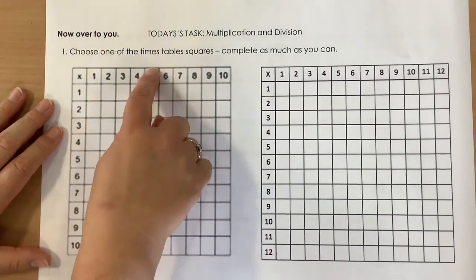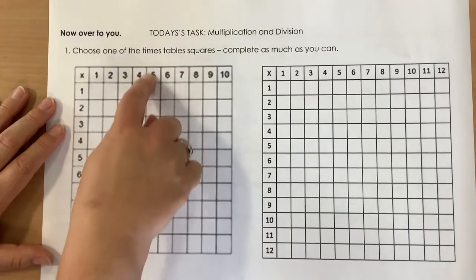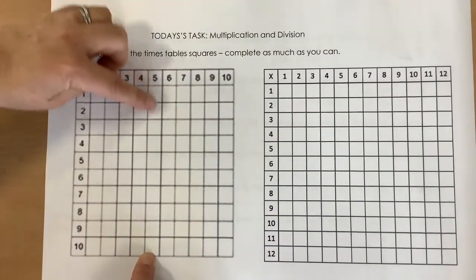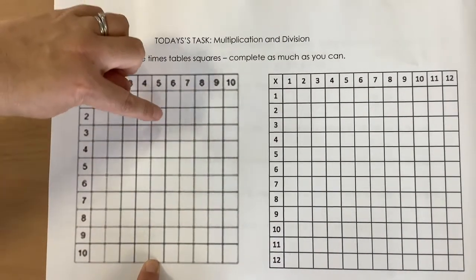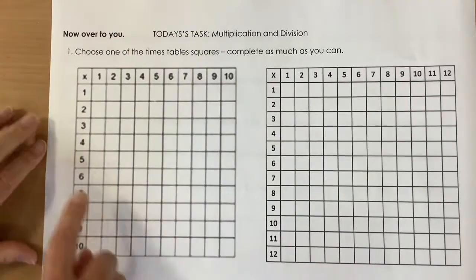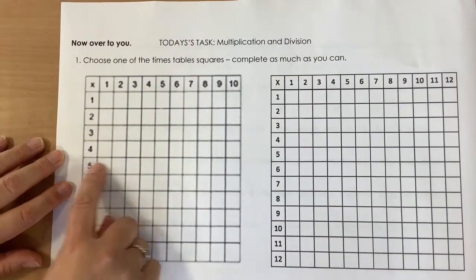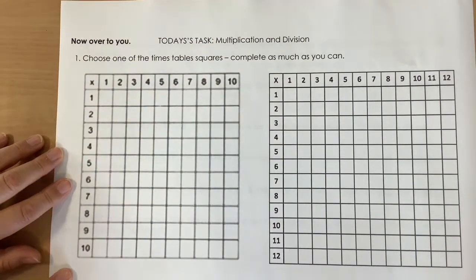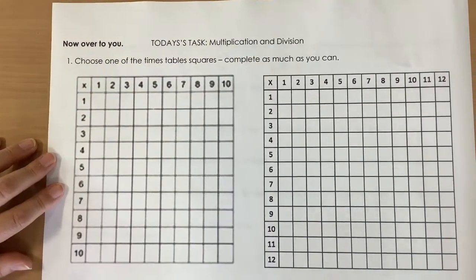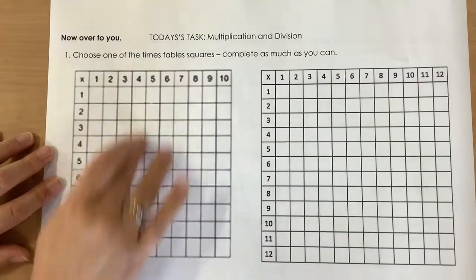So if you know the 5 times table, you would write all of the answers in this column. 5 times 1, 5 times 2, 5 times 3. You can also then write it across this way. 5 times 1, 5 times 2. And you'll see very quickly that the table does actually start to fill up if you work on one times table at a time.